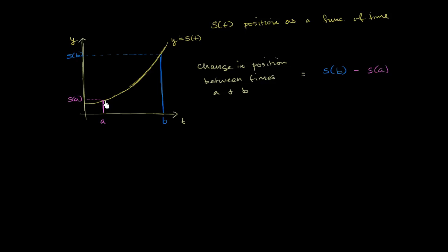Now let's think about what happens if we take the derivative of this function. The derivative gives us the slope of the tangent line at any point. For a very small change in t, it tells us how much we are changing in position. We write that as ds/dt, the derivative of our position function at any given time. The rate at which position changes with respect to time is equal to velocity.